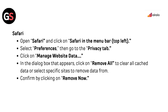In Safari, open Safari and click on Safari in the menu bar, which is in the top left. Select Preferences, then go to the Privacy tab. Click on Manage Website Data. In the dialog box that appears, click Remove All to clear all cached data, or select specific sites to remove data from. Confirm by clicking Remove Now.